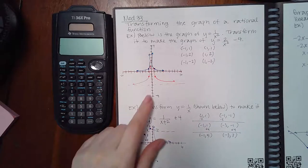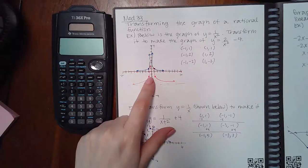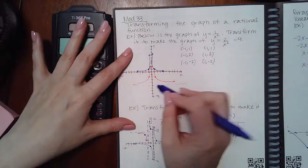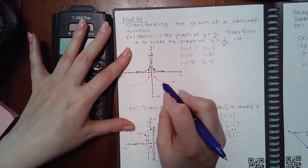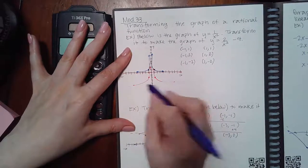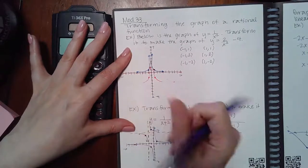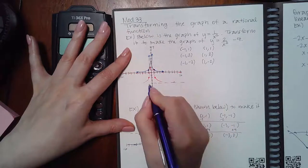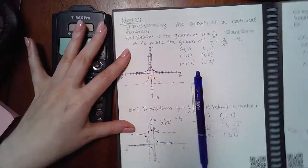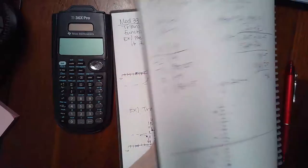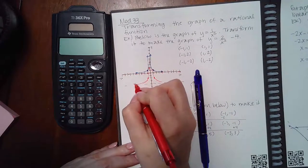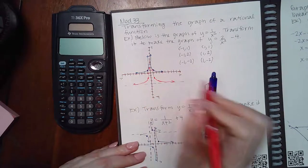I drew the graph a little bit too far down. The horizontal asymptote should have been at negative 4, and so the graph should have gone in this direction.